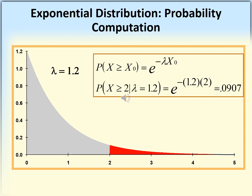For example, if lambda = 1.2 and we want P(X ≥ 2), this equals e^(-1.2 × 2) = e^(-2.4). Using a calculator — press shift, ln, -2.4, equals — we get 0.0907. That concludes this lecture.